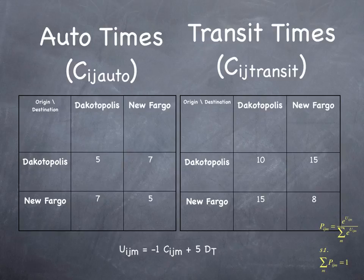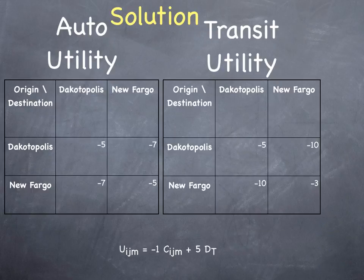Use the utility expression that's given in the logit model, which is shown in the lower right, and solve this problem. Pause the video. Well, the solution is given here. The utility expression was very simple. We're taking the costs for auto and multiplying them by negative 1, and that gives us our utility by auto. We're taking the costs by transit, also multiplying them by negative 1, but then adding 5, and that gives us our utility by transit.